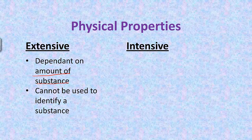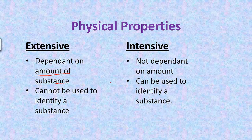An example would be the mass of something. If I said we had 24 grams of gold, that would be an extensive physical property because it depends on how much of it there is. Intensive is not dependent on the amount, and it can be used to identify a substance.